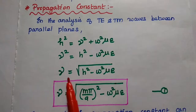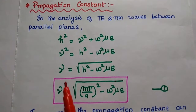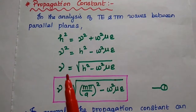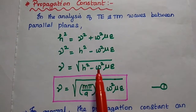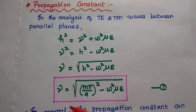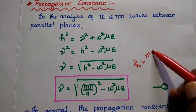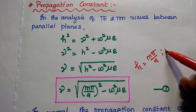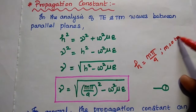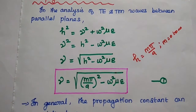Then we can take the square root on both sides. So we can get the propagation constant γ = √(H² − ω²με). Here the H value is nothing but mπ/a, where m varies from 0 to infinity. This is the first equation — the general expression for the propagation constant of TE and TEM waves in parallel planes.